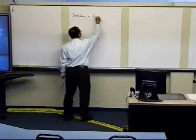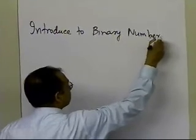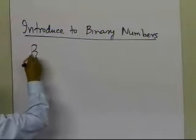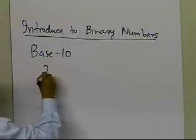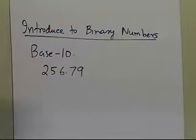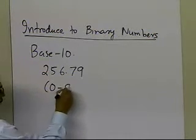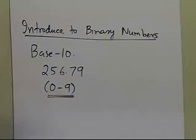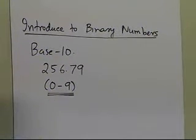To binary numbers. If you look at day-to-day numbers, we have those numbers in base 10. So we talk about numbers like 256.79, for example. We are using digits from 0 through 9 in the base 10 system, and that's why it's called the base 10 system — because there are 10 digits going from 0 to 9, including 0, so up to 9 makes it 10 digits.